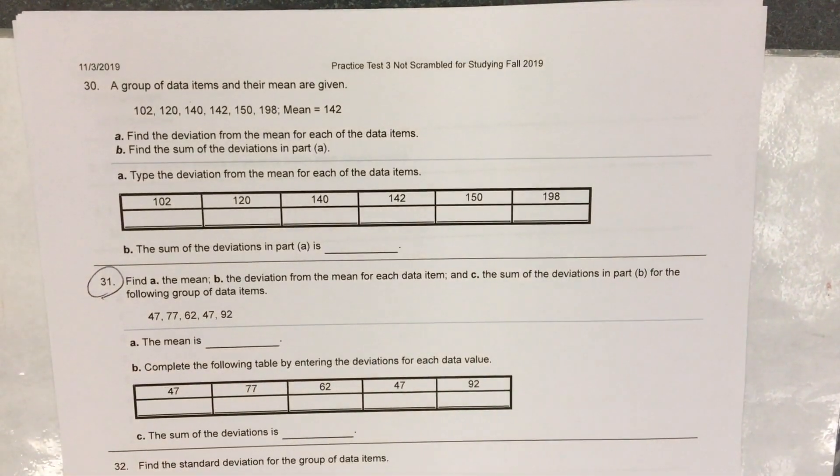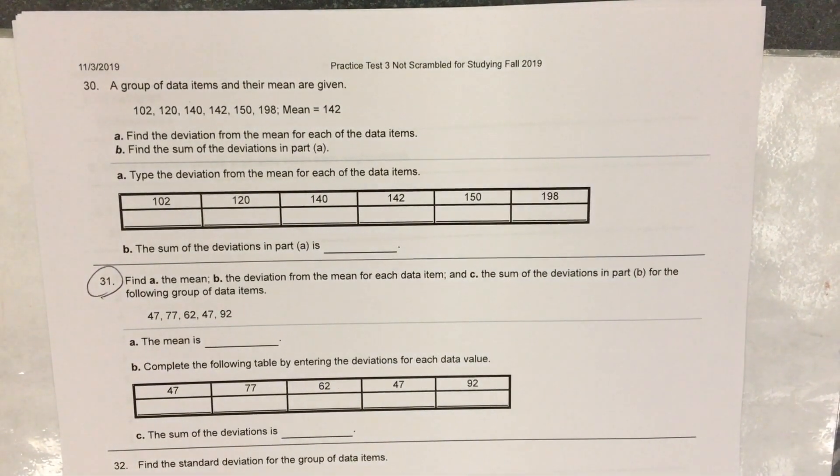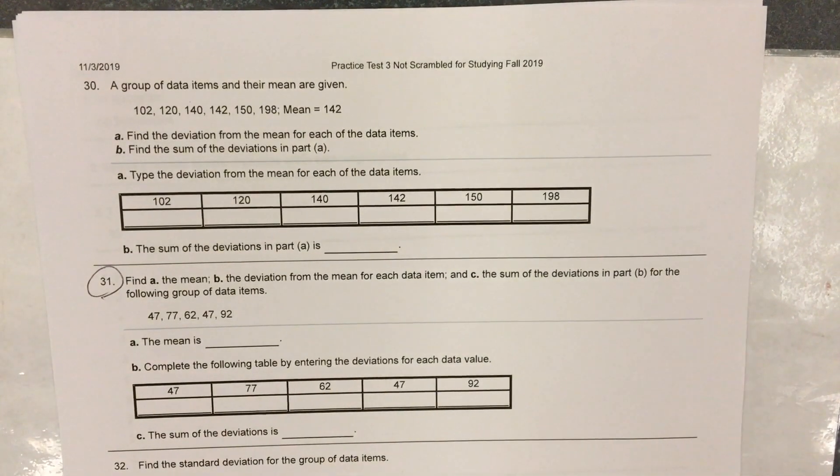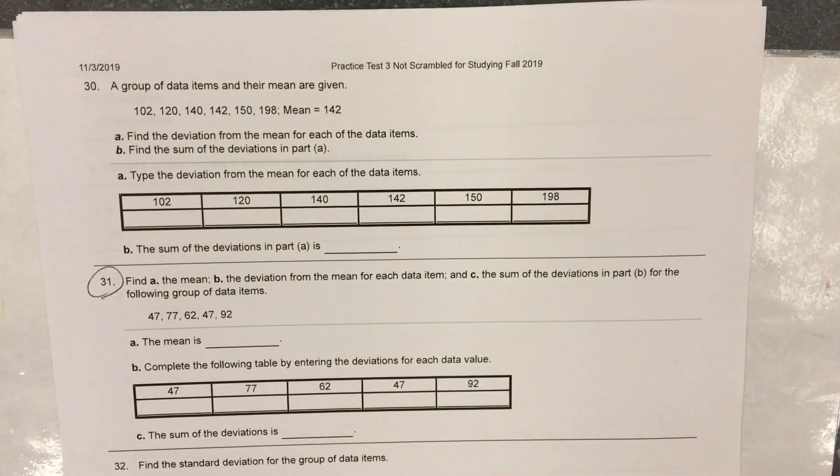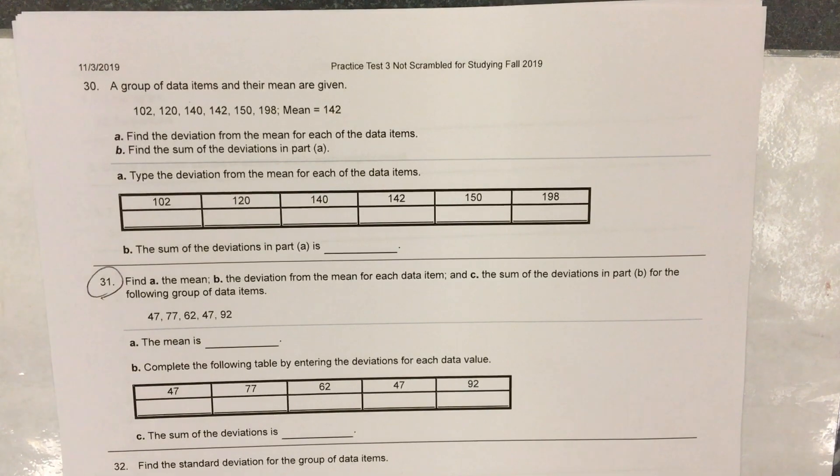On problem 31, they want you to find the mean, then find the deviation from the mean for each data item, and the sum of the deviations. So it is a three-part problem.